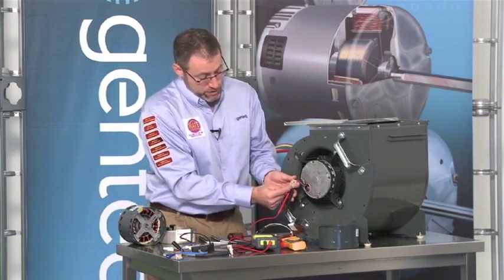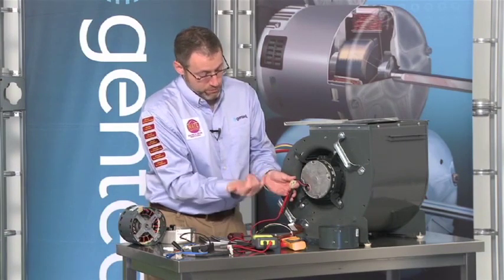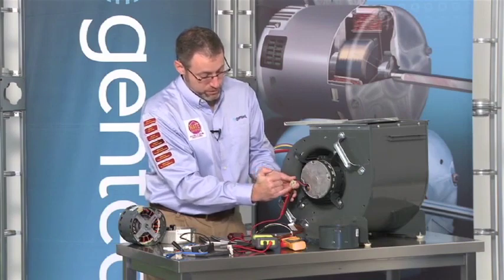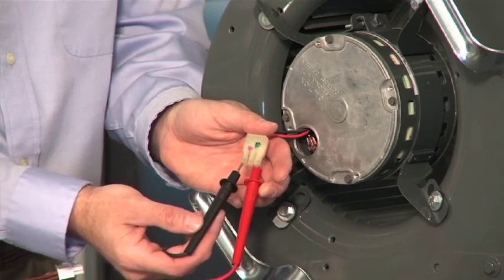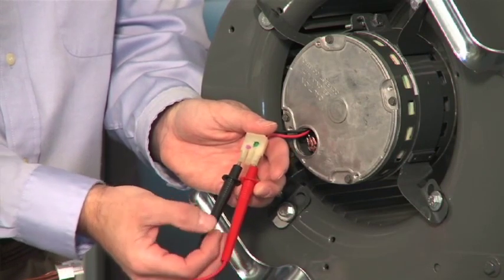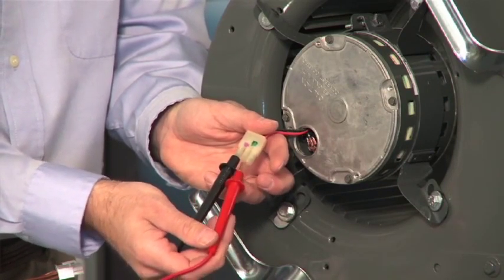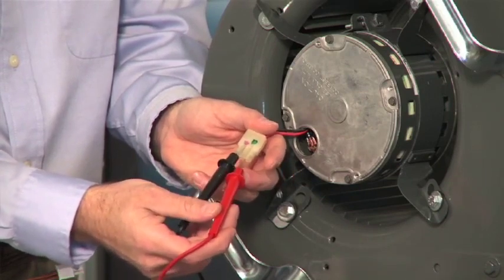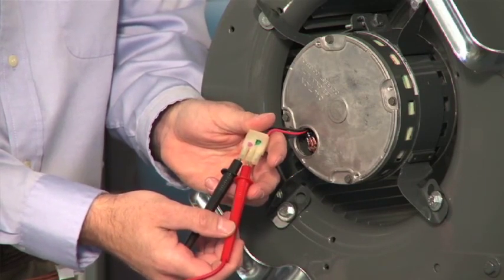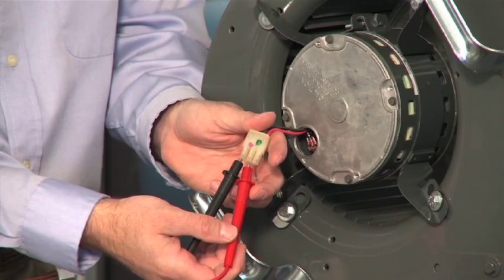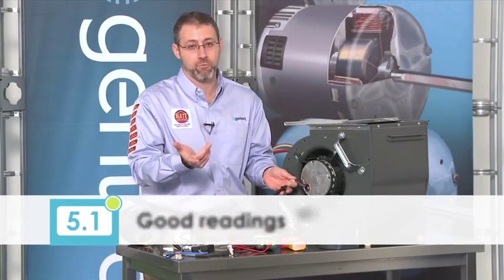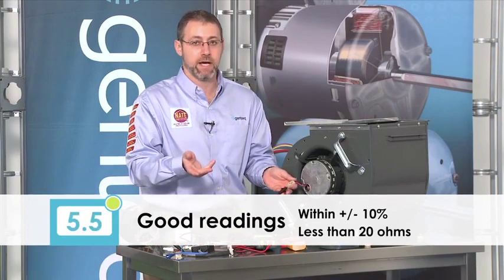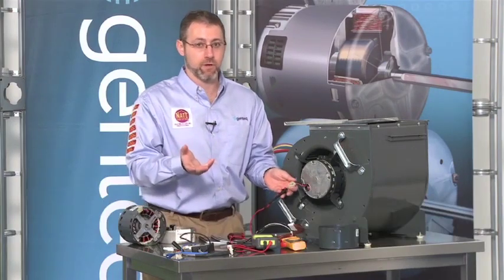So we would simply check 1 and 2, and then we're going to check 1 and 3, and then we're going to check 2 and 3. And if I read the same, plus or minus 10%, if I read like in the example you're looking at 5.1, 5.3, and 5.5, that's a perfectly good motor.